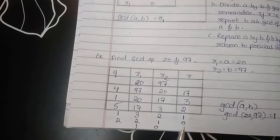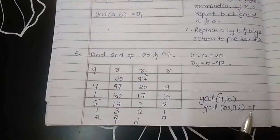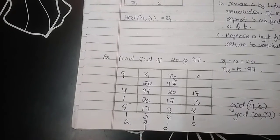So, finally, we can write the GCD of 20 and 97 will be 1 because the value of R1 is 1 now. Okay? Thank you.